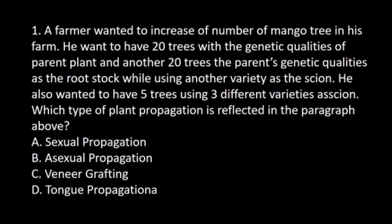Number 1. A farmer wanted to increase the number of mango trees in his farm. He wanted to have 20 trees with the genetic qualities of the parent plant, and another 20 trees using the parent's genetic qualities as the rootstock while using another variety as the scion. He also wanted to have 5 trees using 3 different varieties as scion. Which type of plant propagation is reflected in the paragraph above? A. Sexual propagation. B. Asexual propagation. C. Veneer grafting. D. Tongue propagation. The answer is B. Asexual propagation.